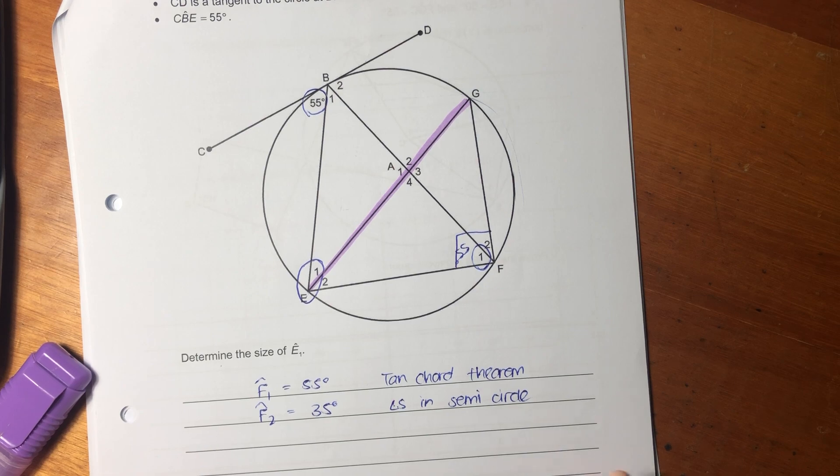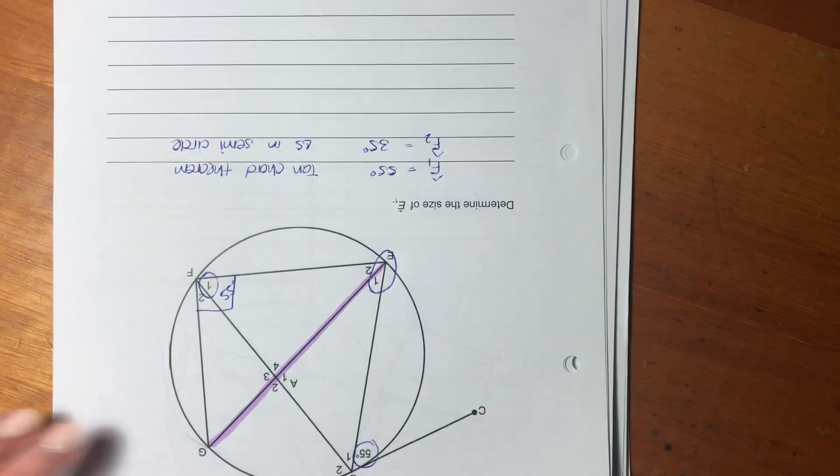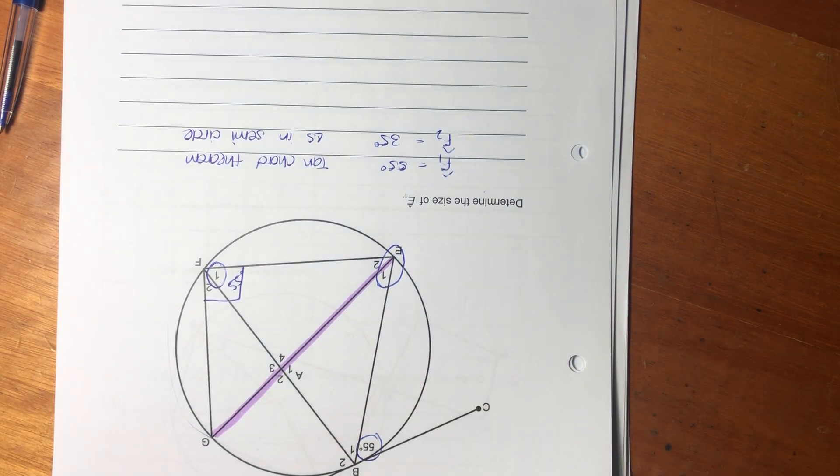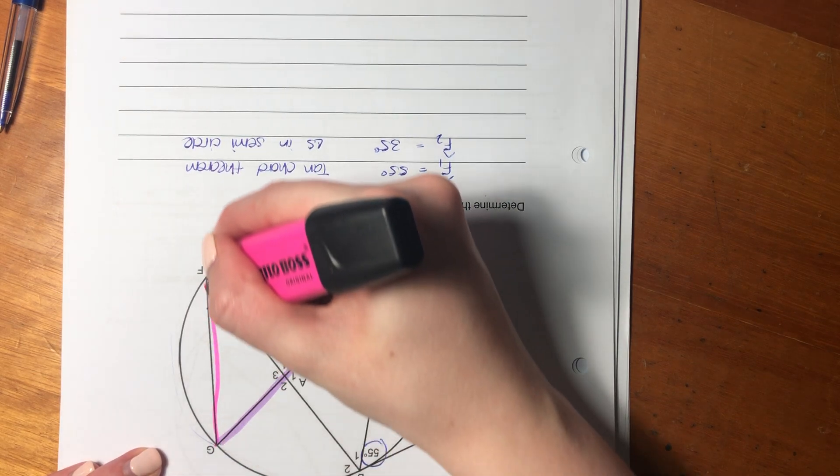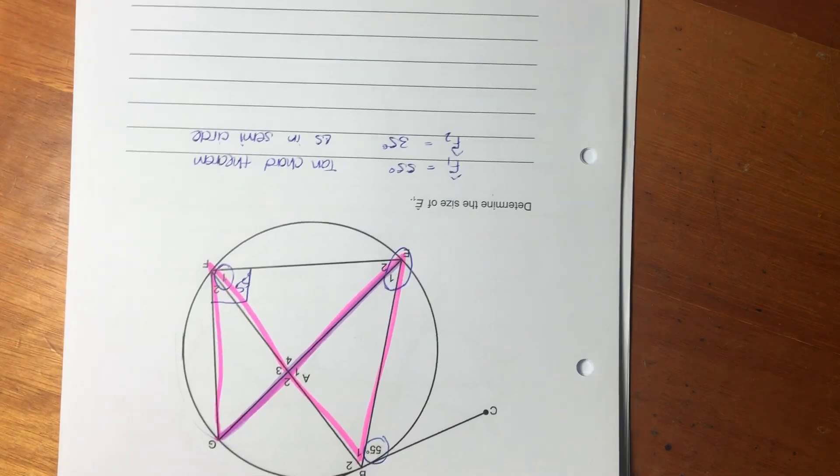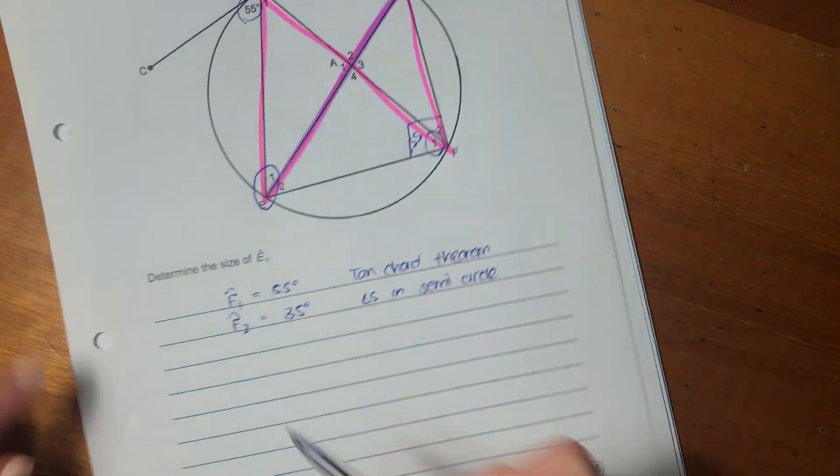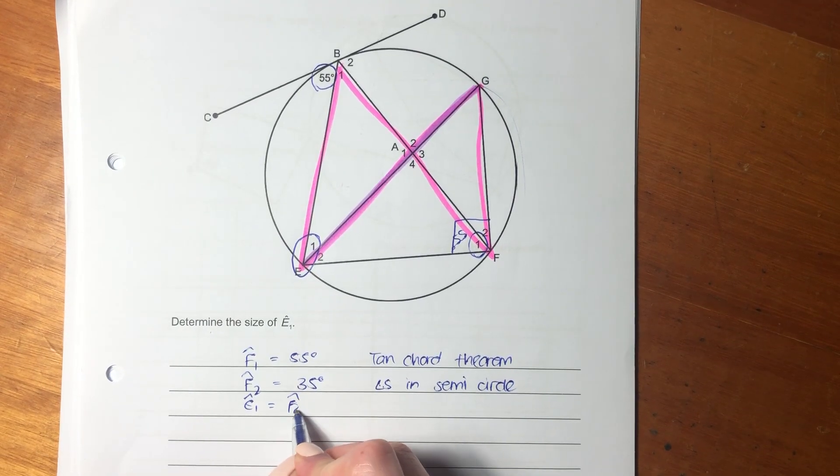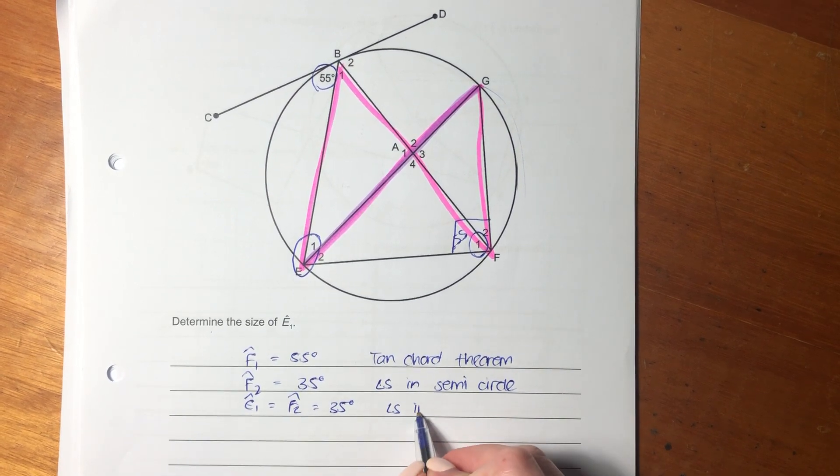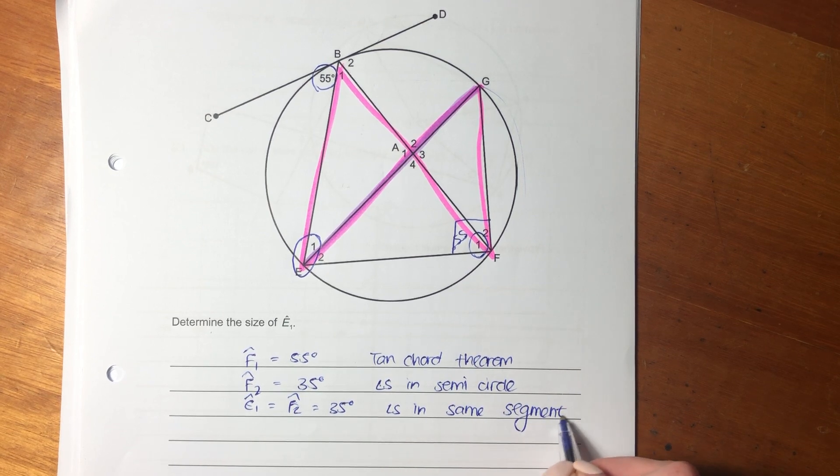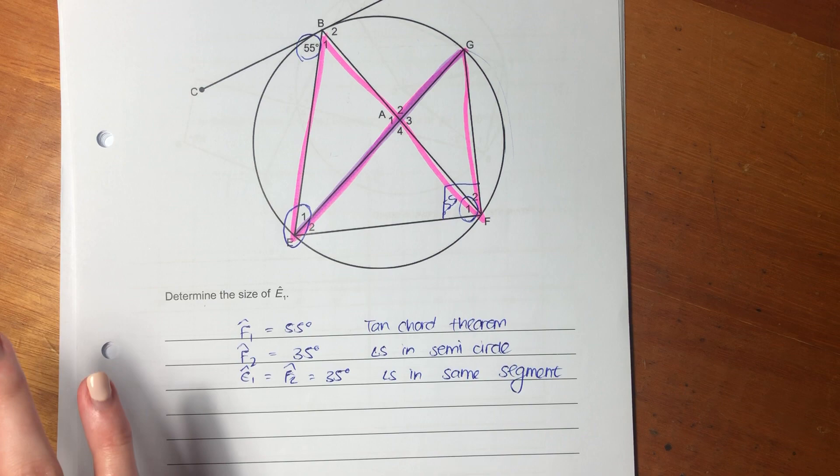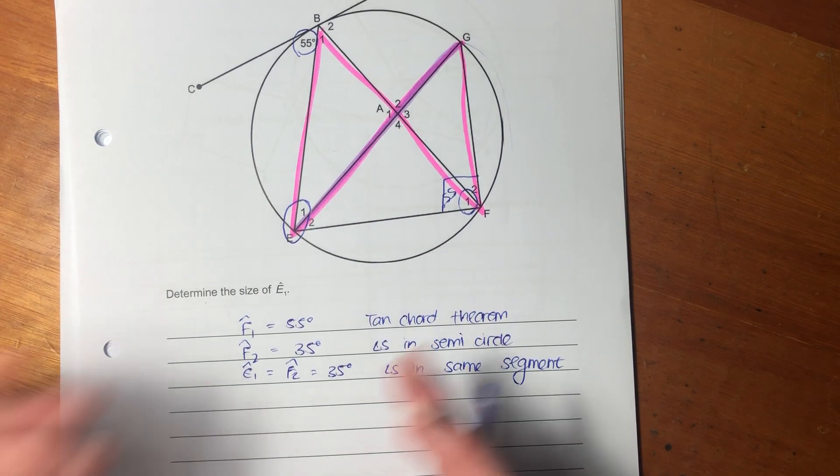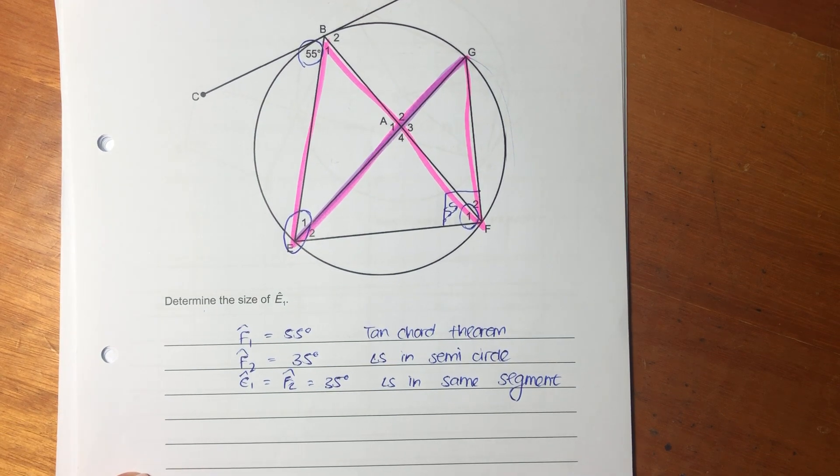But what is absolutely fantastic about F2 is it is angles of the same segment with E1. Let me show you. You see here? F2, go back, E1. So they are angles in same segment. So what we have is E1 equals F2 equals 35 degrees because of angles in same segment. So it's actually a really nice question. It's not actually too difficult once you see what you have to do. It's important with these questions, and I know I keep saying this, but they build on each other. So we proved the tan-chord theorem, and then we basically use what we proved to do this question.